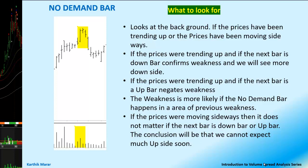The weakness is more likely if the no-demand bar happens in an area of previous weakness — that is, if it appears in a previous rejection zone, the weakness will be more pronounced. The smart money, sensing that we are in a rejection zone, will step back and the prices will come down again. If the prices were moving sideways, it does not matter much whether the next bar is a down or up bar; the conclusion is that we cannot expect much upside soon. In a downtrend, we do not bother much as it only adds to existing weakness.